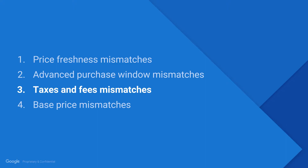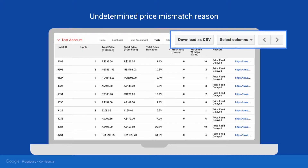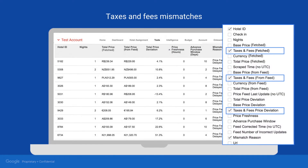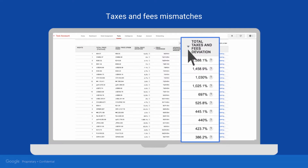Let's move on to taxes and fees mismatches. For this, you'll need to add additional columns of data. These extra columns give you more data to sort itineraries by so you can spot patterns and identify the root cause for your price mismatches. Add three new columns to your view: taxes and fees fetched, taxes and fees from feed, and taxes and fees price deviation. Click the column heading taxes and fees price deviation to sort. Once your itineraries are sorted, look for large price deviations between the taxes and fees Google fetched and the taxes and fees submitted in your feed. Discrepancies can indicate if taxes and fees were left out of your feed or if they were not synced between your systems.